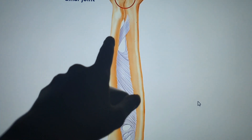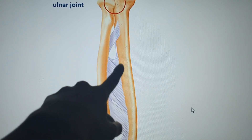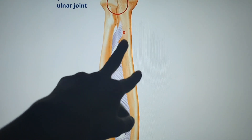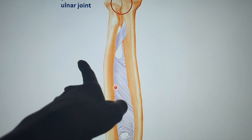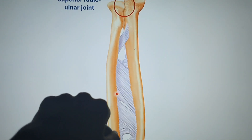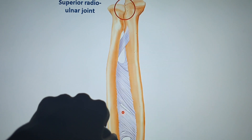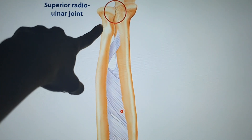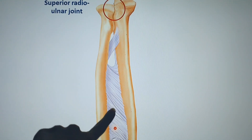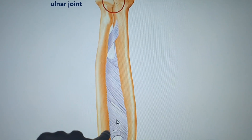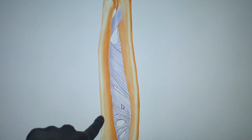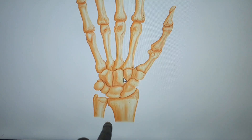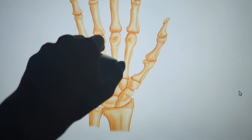We must not forget that there is an interosseous membrane between the radius and the ulna. Here you can clearly see the radius and the ulna, and this is the inferior radio-ulnar joint.